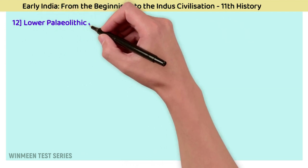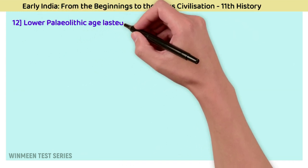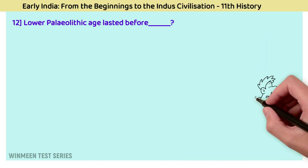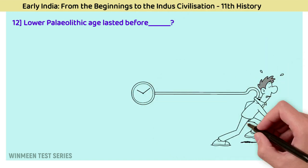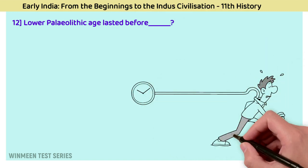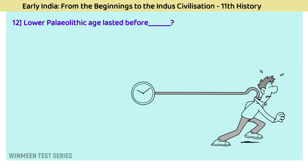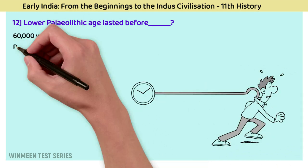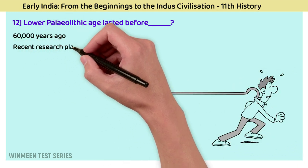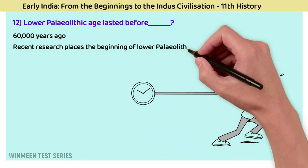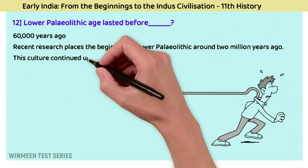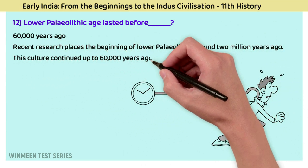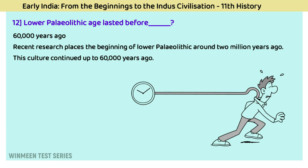Question 12: The Lower Paleolithic age lasted before when? The answer is 60,000 years ago. Recent research places the beginning of Lower Paleolithic around 2 million years ago, and this culture continued up to 60,000 years ago.